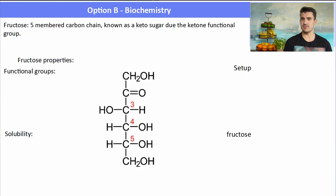Fructose is a five-membered carbon chain known as a keto sugar because it contains the ketone functional group. So when it forms a cyclic molecule, the structure is quite different. Its functional groups contain a ketone. It has a large number of OHs. So it again is highly soluble in water.